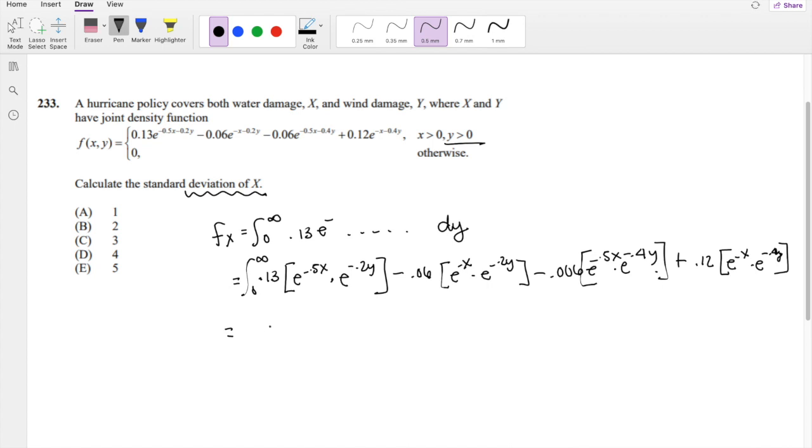So the first term is going to be negative 0.13 over 2 e to negative 0.5x because that just stays the same because it's a constant. And then this just stays the same as well. Minus 0.06 divided by negative 0.2. This just stays the constant. And then the second part just stays the same too. 0.006 divided by 0.4 e to negative 0.5x e to the negative 0.4y. And this is the last one. 0.12 divided by negative 0.4 e to the negative x e to the negative 0.4y.